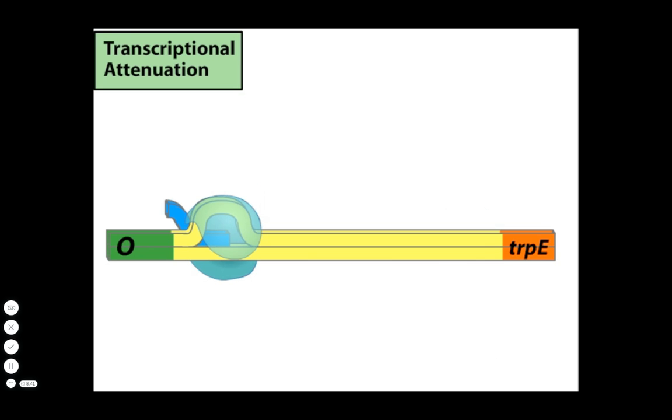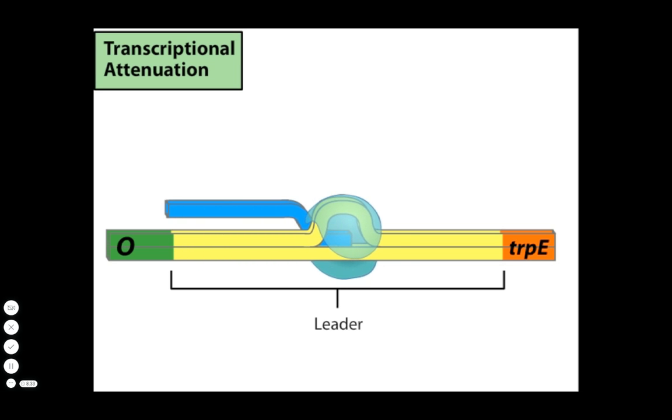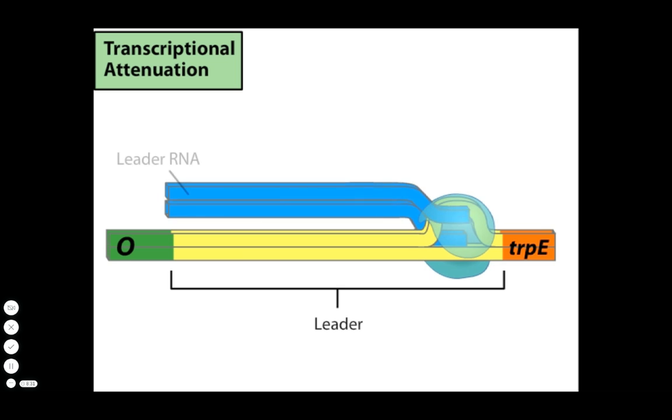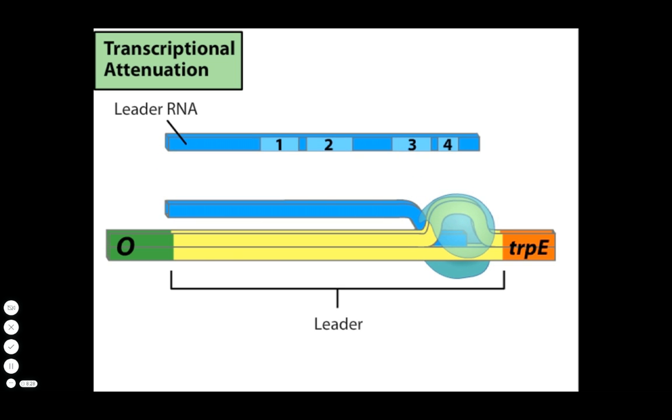Attenuation occurs at a region of the operon called the leader that lies between the operator and the first structural gene, trpE. The leader contains a number of important regions, including four regions that can form base pairs with each other in different combinations.